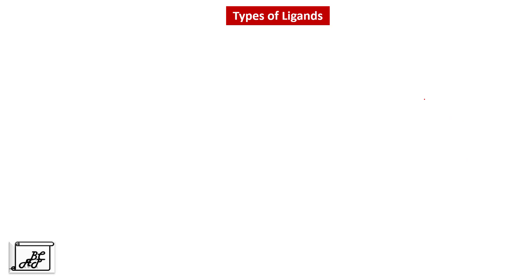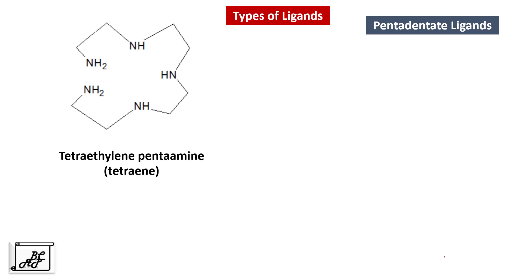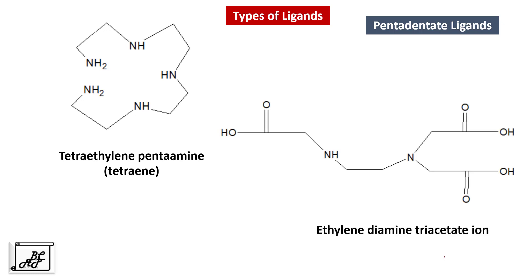Let's move to pentadentate ligands. The first example is tetraethylene pentamine, also called tetren. The second example is ethylenediamine triacetate ion, which has five points of attachment — you can count all five donor sites that hold the central metal atom.